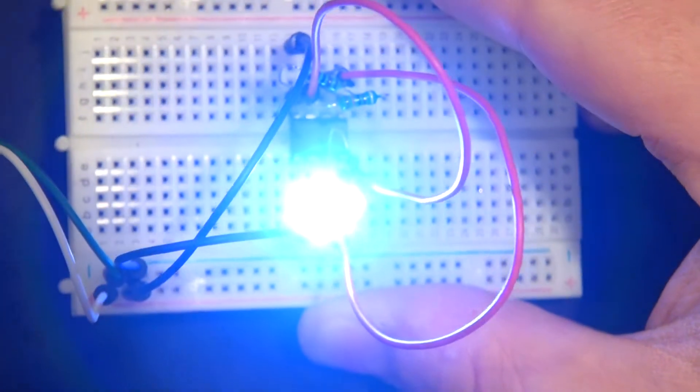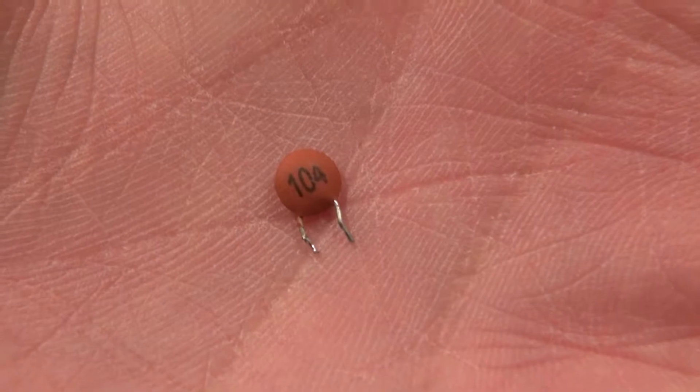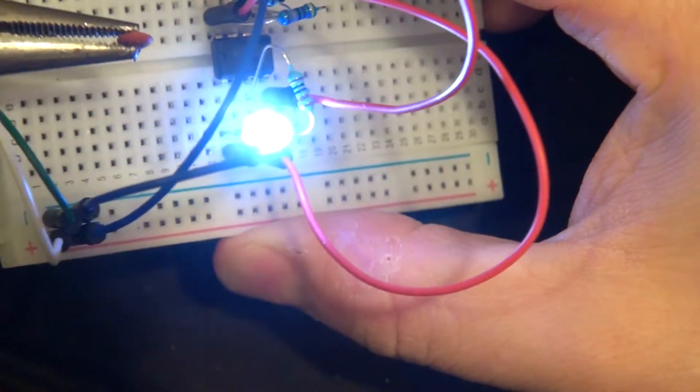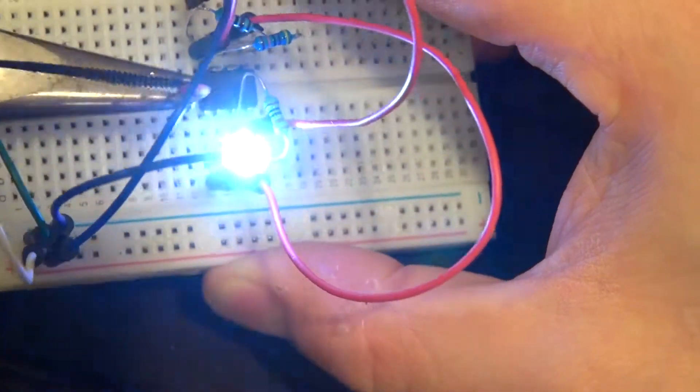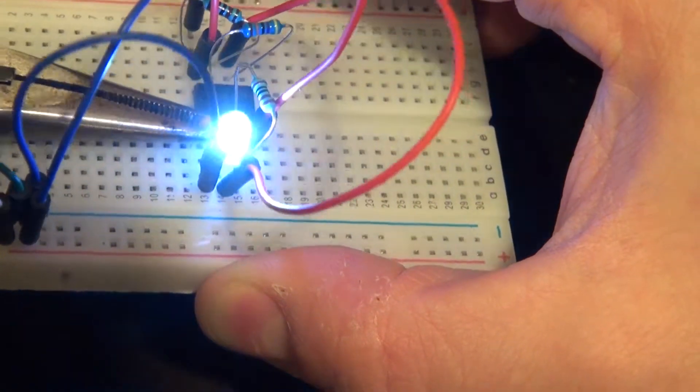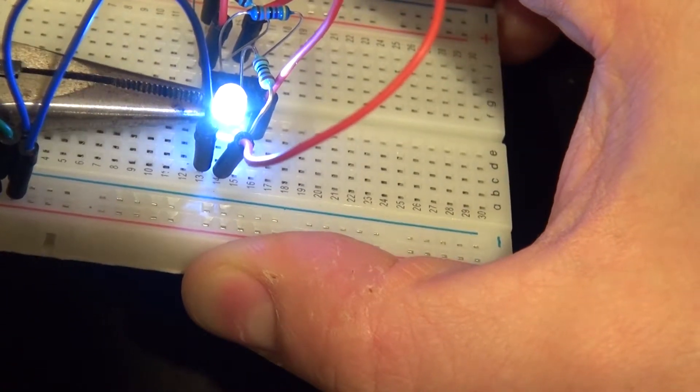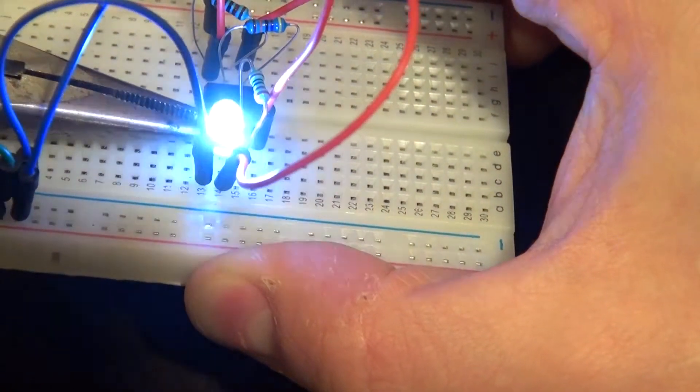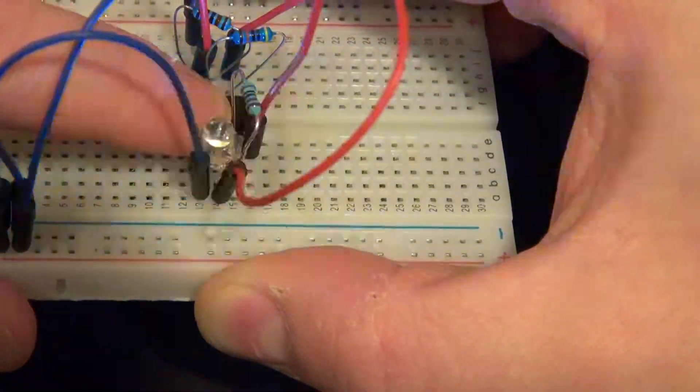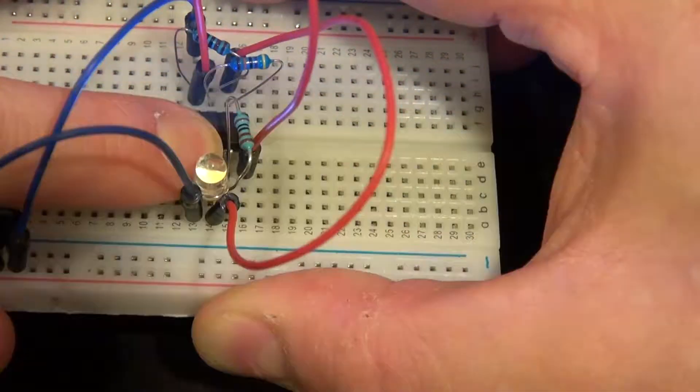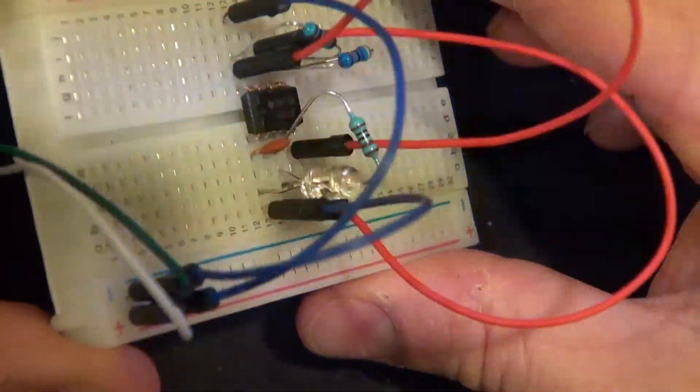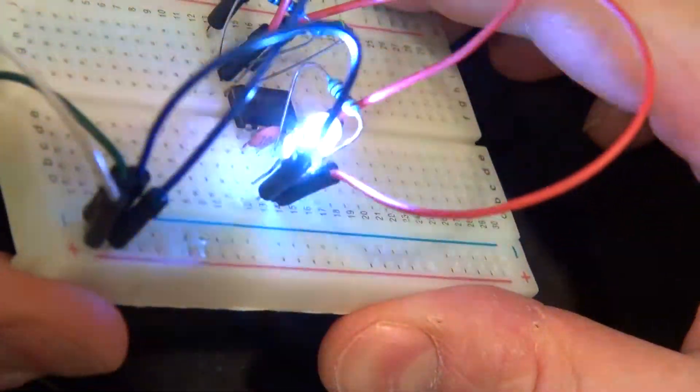Now let's go ahead and remove the capacitor and put a 104 picofarad capacitor. Connect it in just like this. And as you can see, the LED flashes much faster because the capacitor has lower capacitance, which then changes the signal of the square wave.